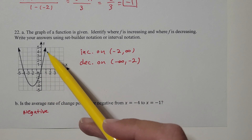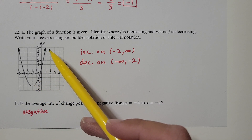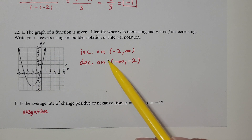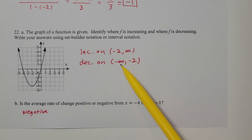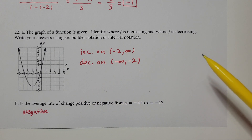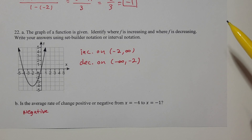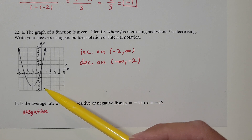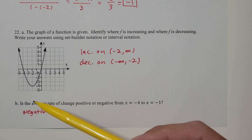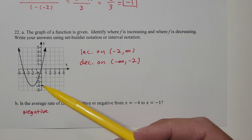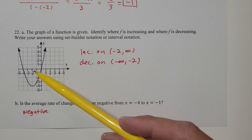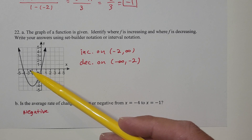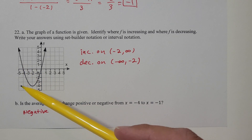After x = -2 the curve is rising, so f is increasing on (-2, ∞). Sometimes students will mess this up and talk about y — don't do that, it's all about x. We don't care how high or low the curve goes. We're changing at x = -2, going from decreasing to increasing.